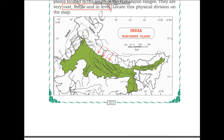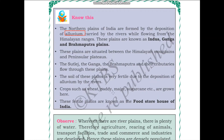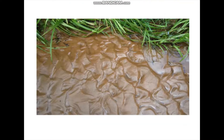All these rivers flow from the top of the Himalayas and bring down fertile soil and deposit it in these plains. So these plains have a very fertile deposition of alluvium. These plains are situated between the Himalayan mountains and the peninsular plateau. Alluvium is a very fertile soil deposit bought by flood waters of rivers - it is a wet, muddy kind of soil.